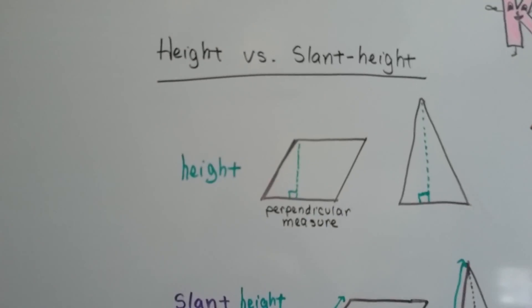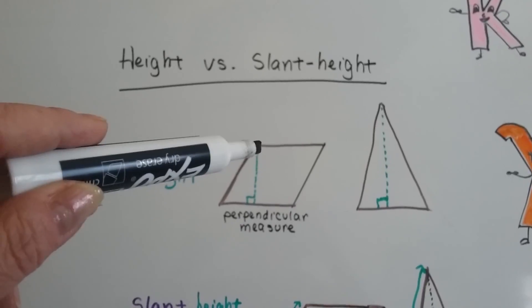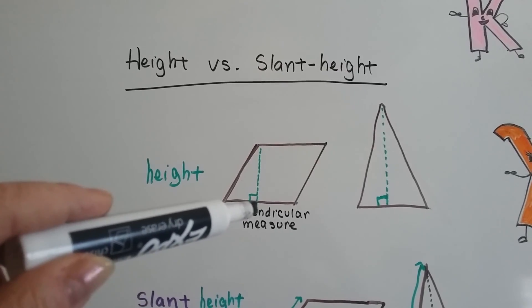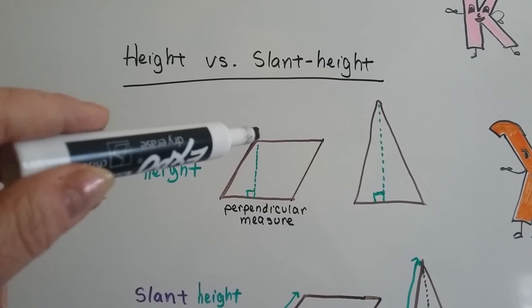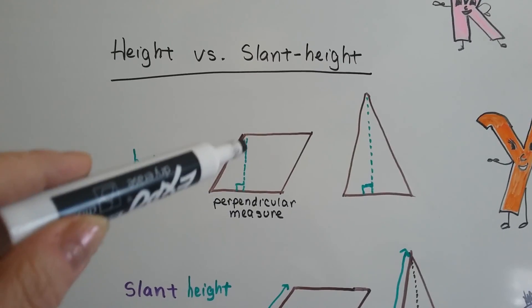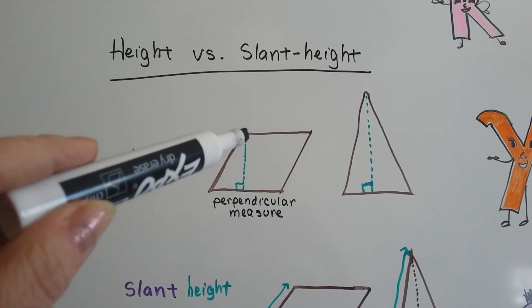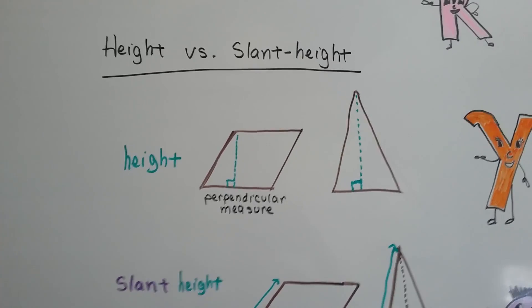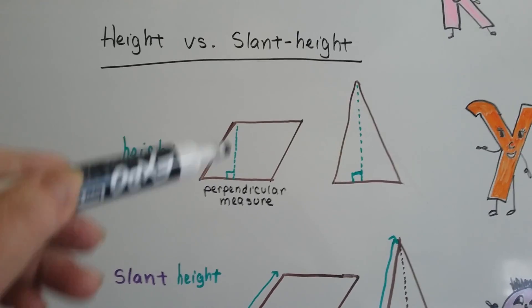The height of this would go from the base and be perpendicular and go straight up. We could put it here, we could put it here, we could put it anywhere. But typically in geometry, you see it coming from a vertex straight down on a perpendicular angle, 90 degree angle.